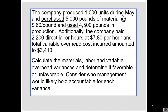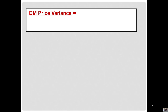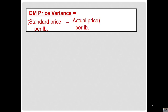We have here a fairly comprehensive example looking at the variances. We're going to start by looking at the direct material price variance. Here you want to compare what you should have paid for materials to what you did pay for materials. We'll take the standard price per pound minus the actual price per pound — I always take standard minus actual in parentheses — then multiply by the quantity purchased to get the total dollar amount of the variance.